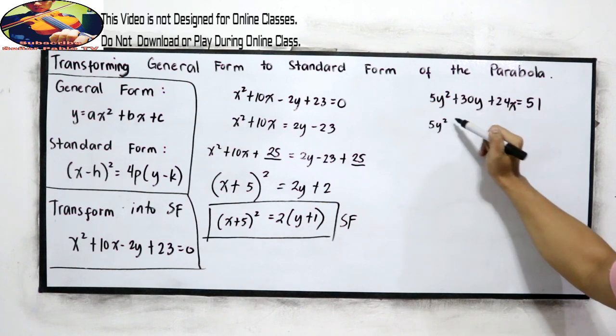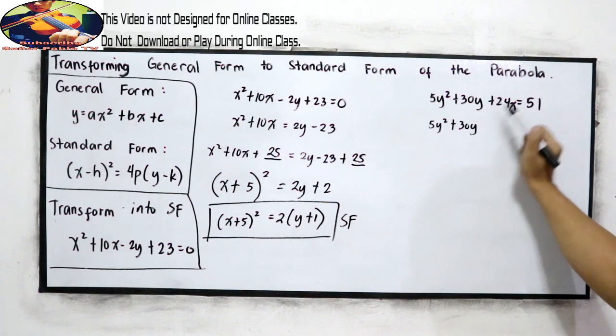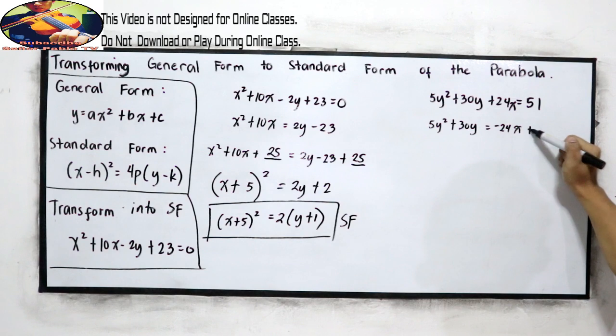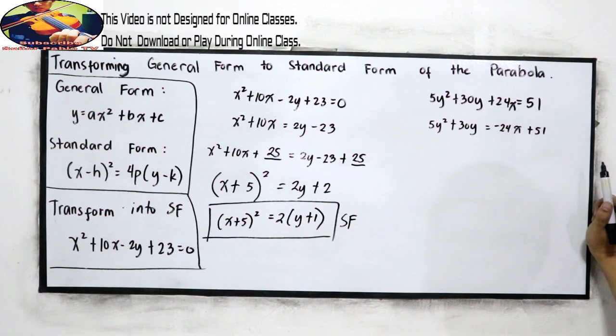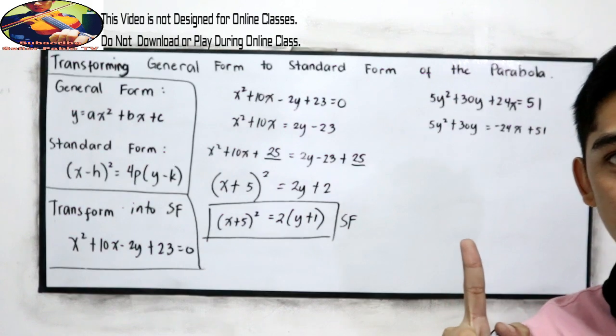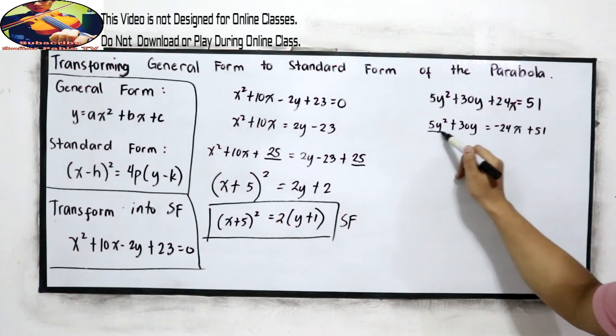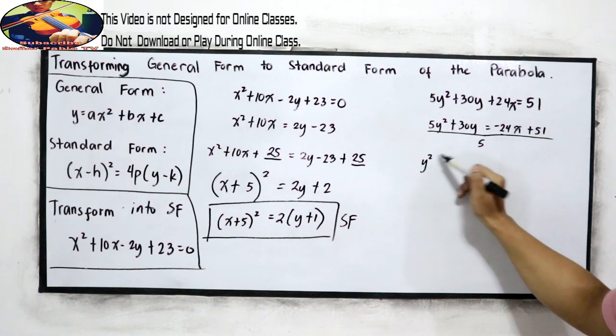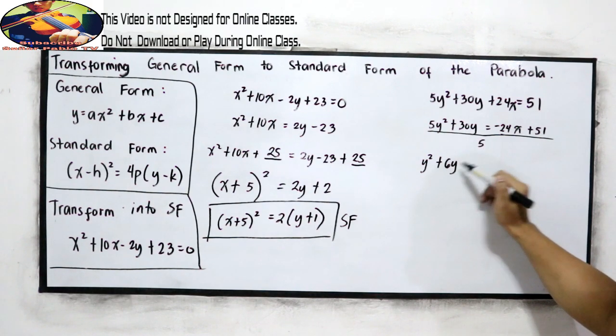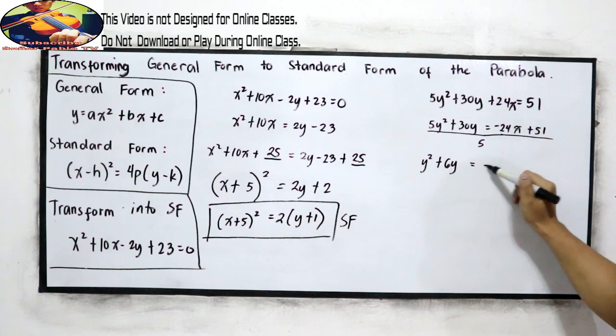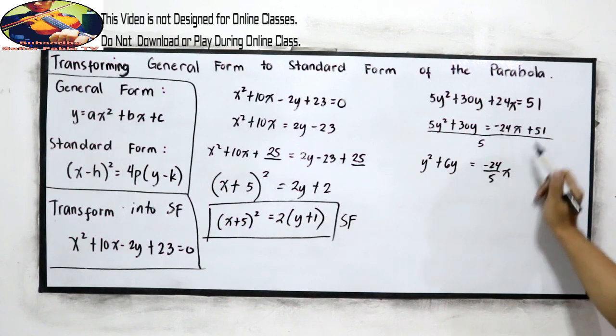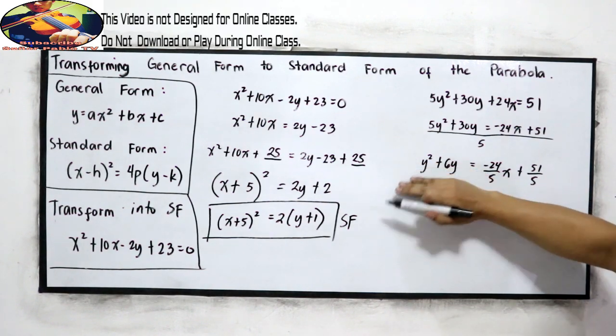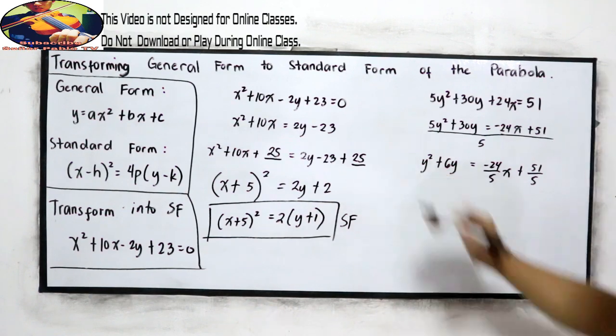So, 5y squared plus 30y equals negative 24x plus 51. So first, divide the equation by 5. So this will become y squared plus 30 divided by 5, so that we can make our left side a perfect square trinomial.